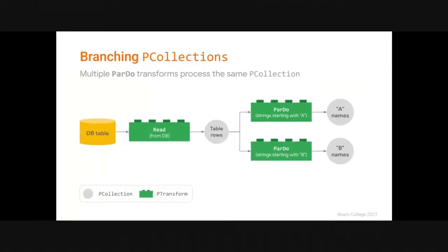The first option is the one that you see on the screen. You can use the same P-collection as input for multiple transforms without consuming the input or altering it. In this example, we are reading a collection of names from a database and using two ParDo transforms to filter the same P-collection, keeping the names starting with A in one case and the names starting with B in the other.